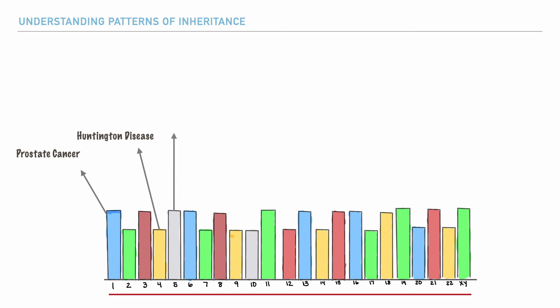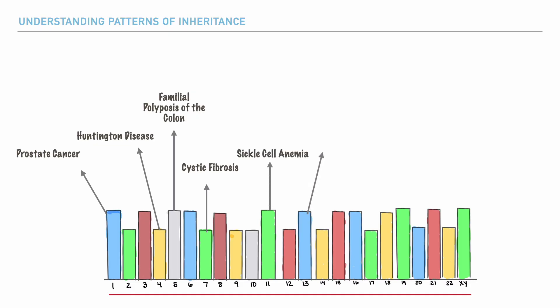For the fifth chromosome, a condition known as familial polyposis of the colon, which is essentially the inheritance of a cancer within the large intestines. On the seventh chromosome, cystic fibrosis. On the eleventh, sickle cell anemia. On the thirteenth, retinoblastoma, which is a cancer that starts in the retina — the back of the eye. On the fourteenth chromosome, Alzheimer's disease. On the seventeenth, a form of breast cancer. On the twenty-first, Down syndrome.